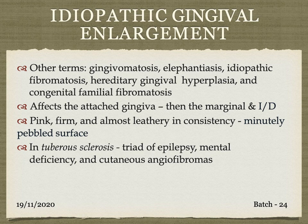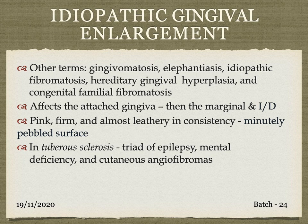Next is idiopathic gingival enlargement, also called gingivomatosis, elephantiasis, idiopathic fibromatosis, hereditary gingival hyperplasia, and congenital familial fibromatosis. Unlike the previous types which most frequently affect marginal gingiva and interdental papilla, idiopathic gingival enlargement affects the attached gingiva first, then proceeds to marginal gingiva and interdental papilla. Clinical features include pink, firm, almost leathery consistency and a minutely pebbled surface. In tuberous sclerosis, a triad of epilepsy, mental deficiency, and cutaneous angiofibromas can be seen along with gingival enlargement.